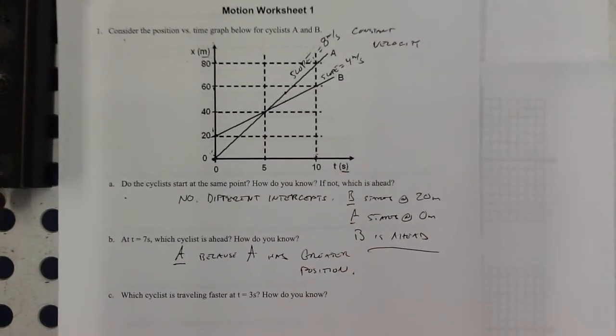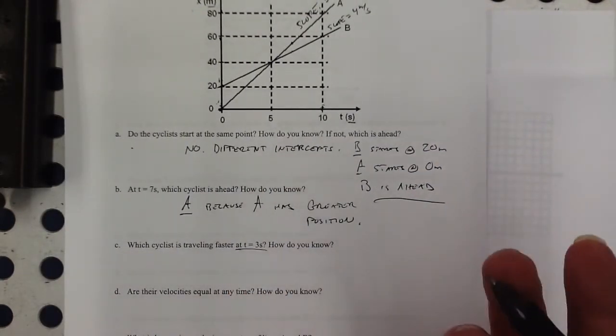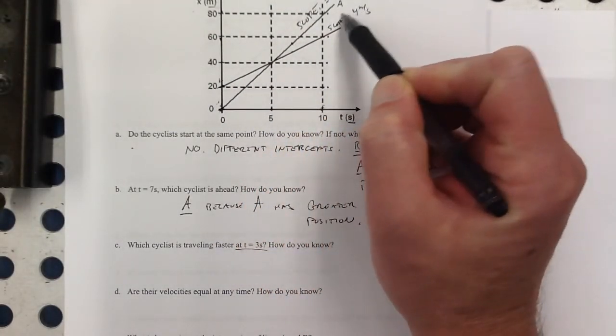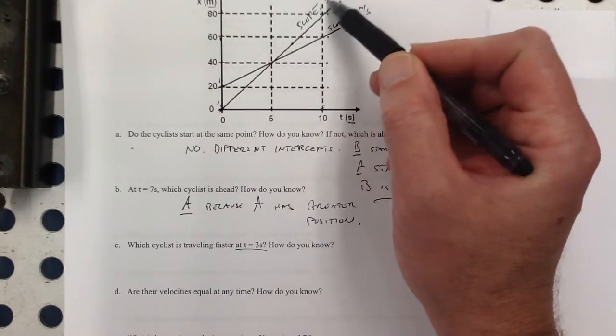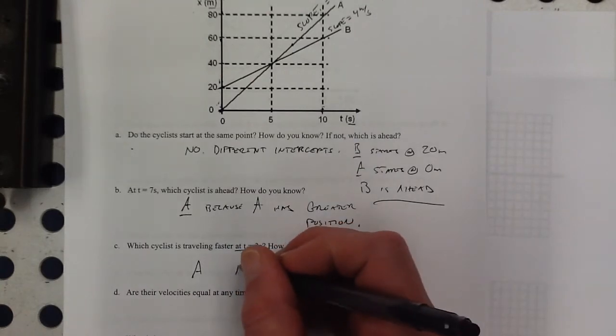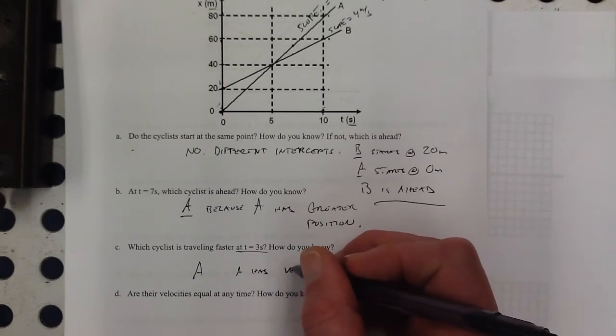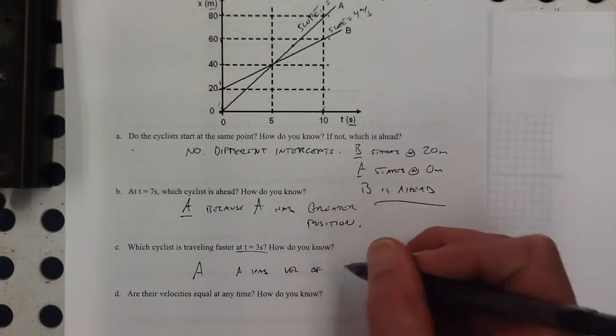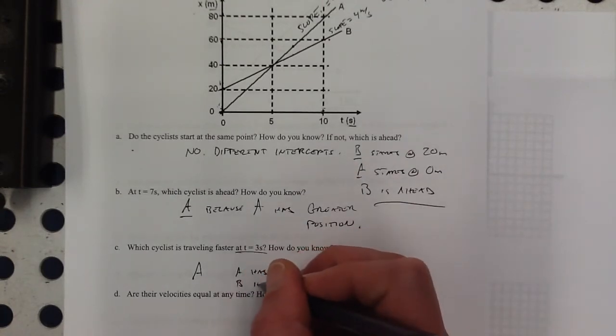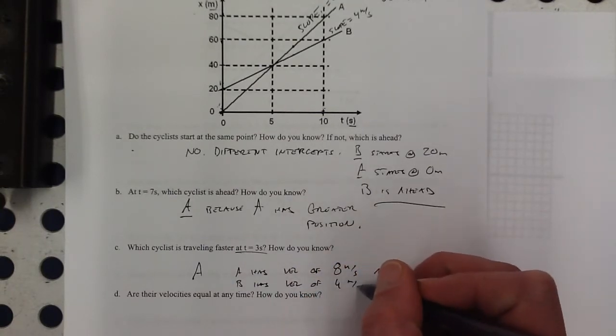Which cyclist is traveling faster at time 3? Well, they're both moving at constant velocities. So the at time 3 thing really has nothing to do with it. This one is always going 8, and this one is always going 4. So A is always going faster than B. Which one's going faster? A. How do you know?